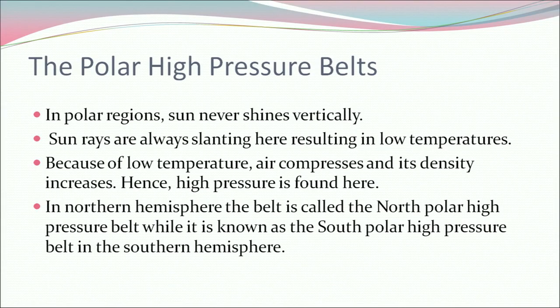The final belt is the polar high pressure belt. In polar regions, the sun never shines vertically — sun rays are always slanting, resulting in low temperature. Because of low temperature, air compresses and its density increases, hence high pressure is found here. In the northern hemisphere the belt is called the north polar high pressure belt, while in the southern hemisphere it is known as the south polar high pressure belt.